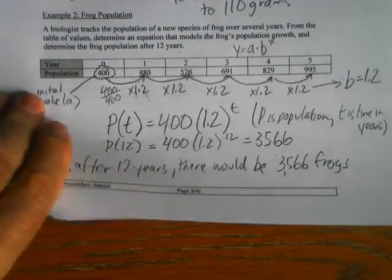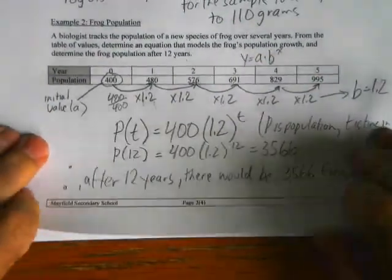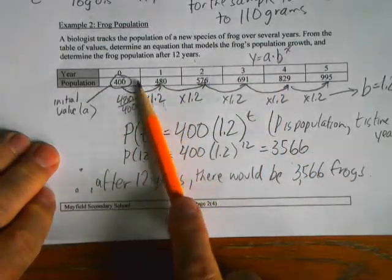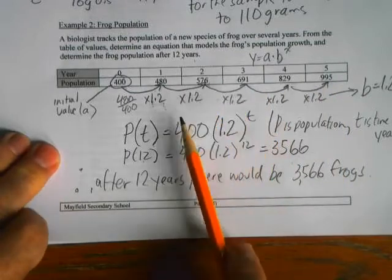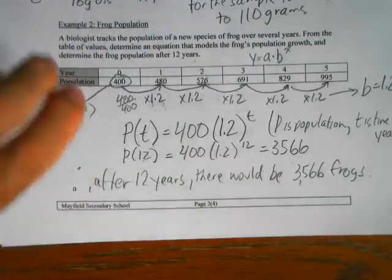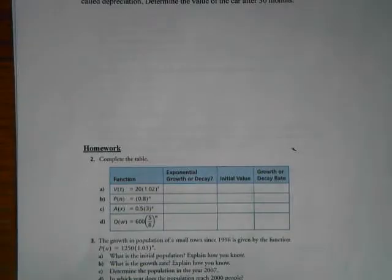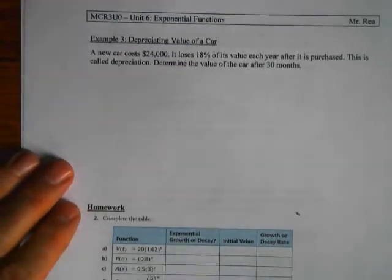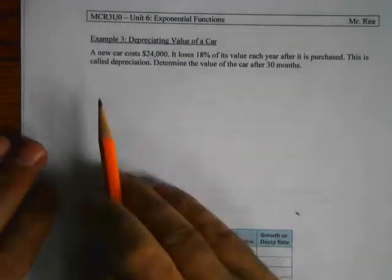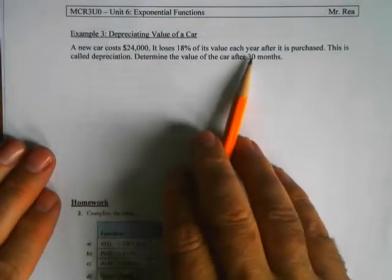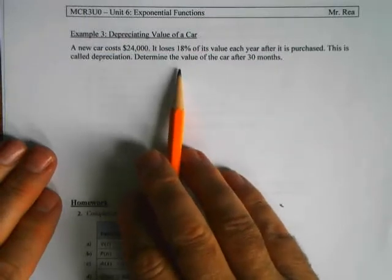When working from a table of values, find the ratio as the values change. The first thing you look for is whether it's going up or down: if it's going up, the b value is bigger than 1; if it's going down, the b value is between 0 and 1.